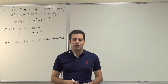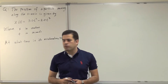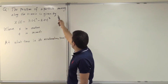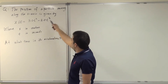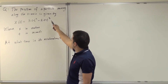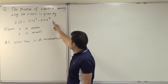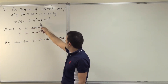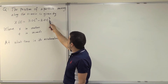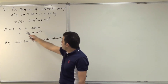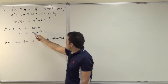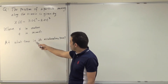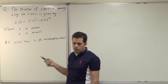As-salamu alaykum. Today we're solving questions from chapter 2. The question reads: the position of a particle moving along the x-axis is given by x of t equals 3t squared minus 2t cubed, where x is in meters and t in seconds. At what time is its acceleration zero?